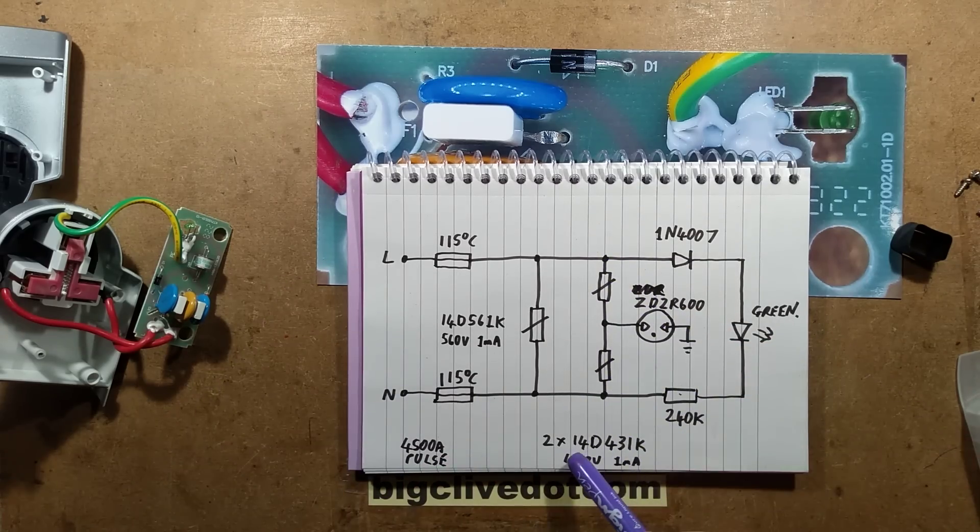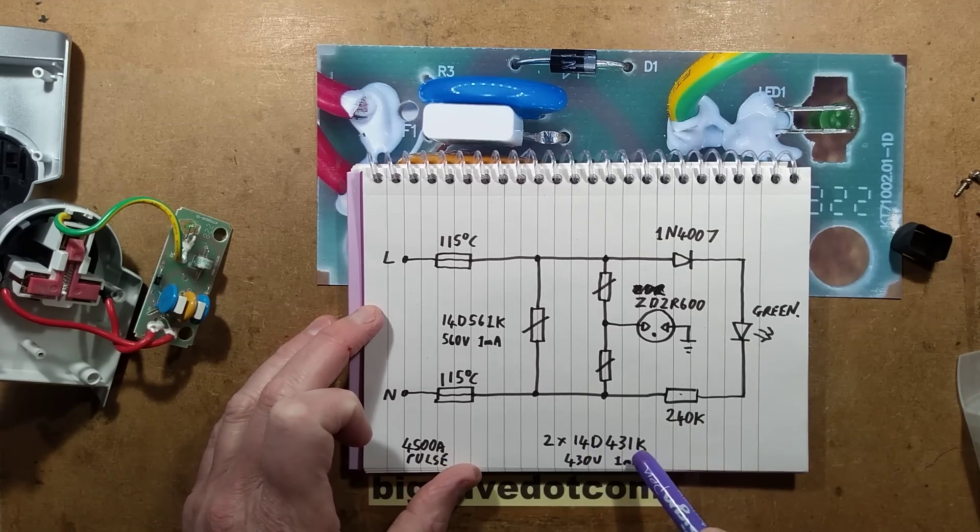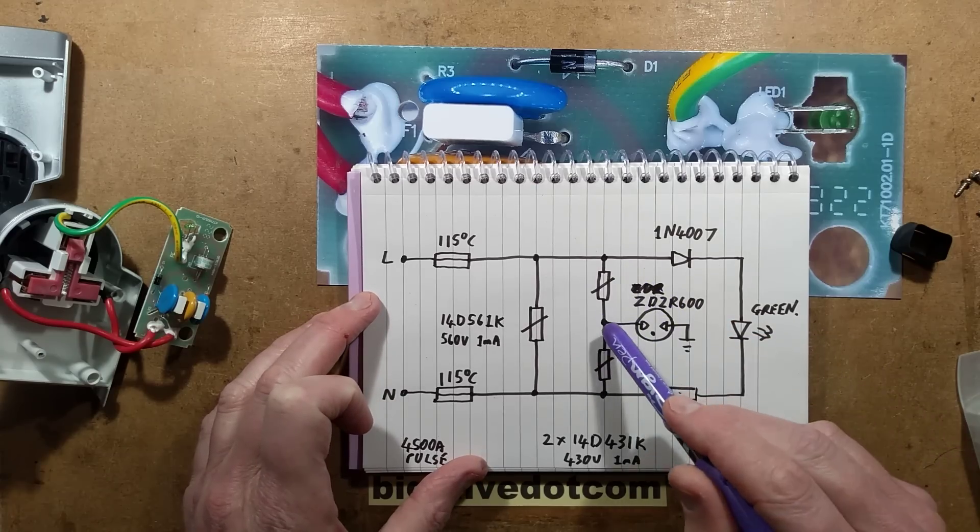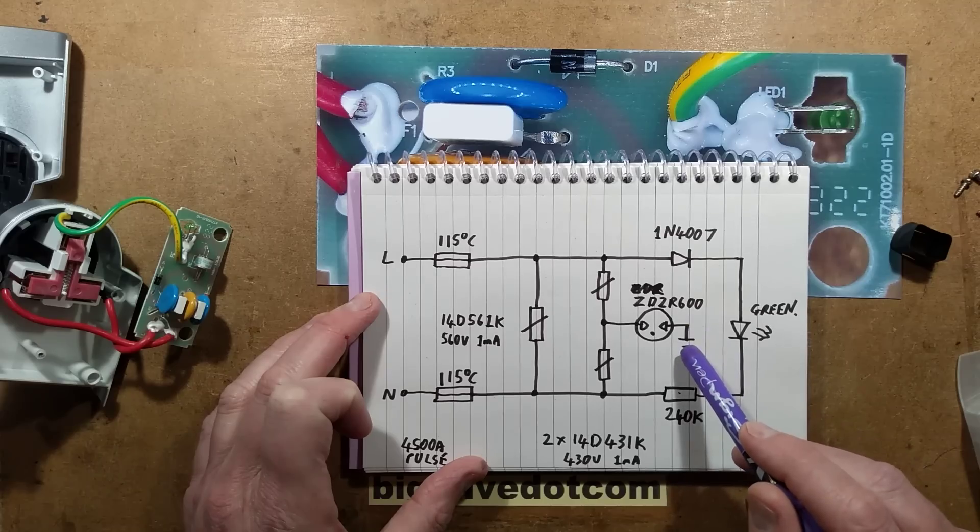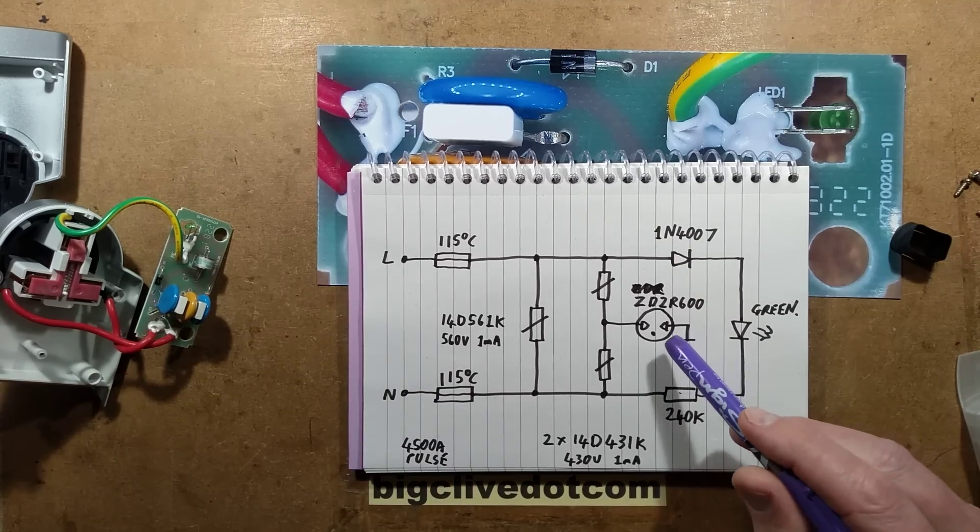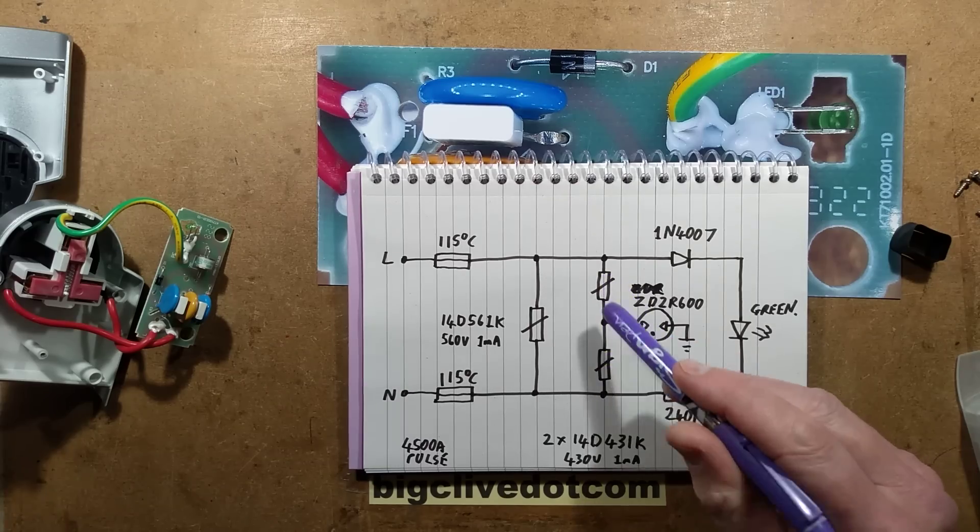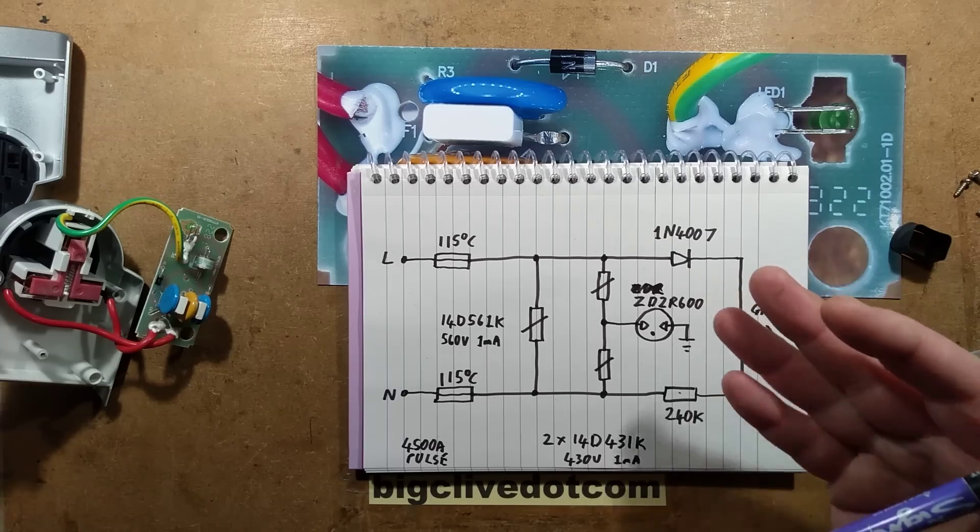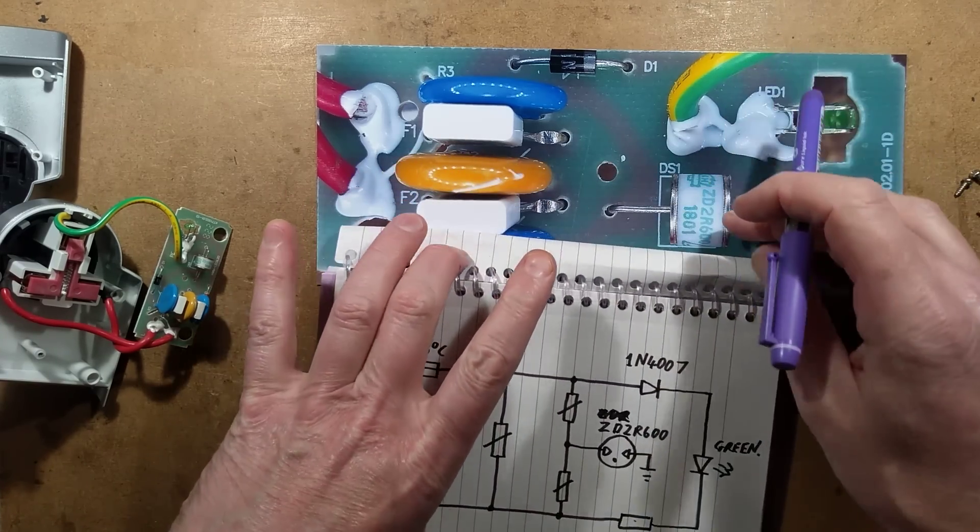For the earth we've got both live and neutral going through two metal oxide varistors, this time 14D 431k, that's 14mm diameter, 430 volts to pass 1mA, and they're both commoned in the middle to a gas discharge tube here which is then connected to earth. And I'm guessing they've done that to just purely avoid earth leakage. They could theoretically have had metal oxide varistors going straight to earth, but by using the gas discharge tube it means an actual fault condition has to occur before any current will flow.